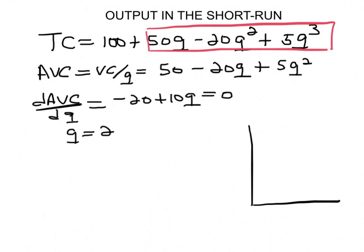So what we just found here is the value of q when this function, average variable cost, is at the lowest point. But what we're really looking for is the value on the horizontal axis, right? The value of price at that point.